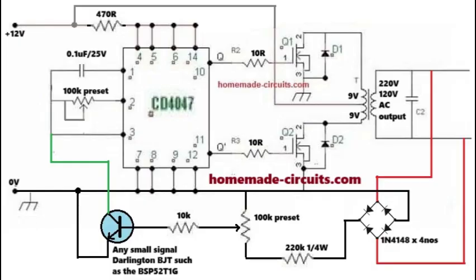So, let's get started. In this video, we will discuss how to add an automatic feedback voltage control to a 4047 IC-based inverter circuit, as shown in the given circuit diagram.